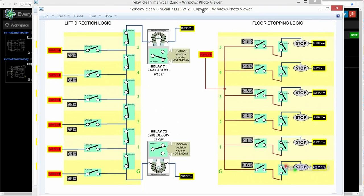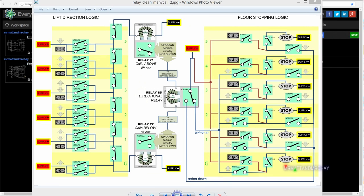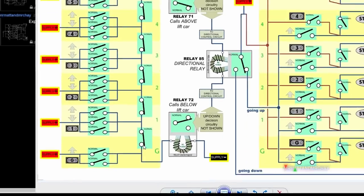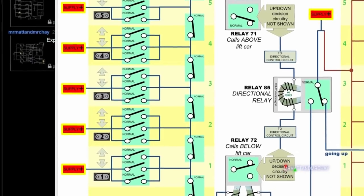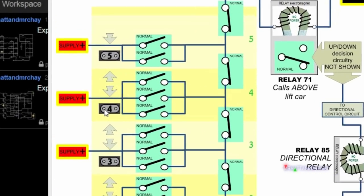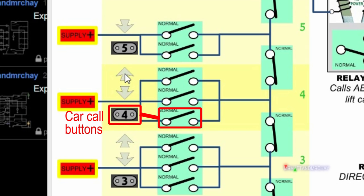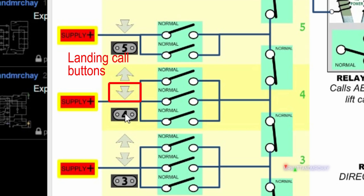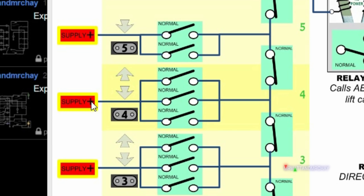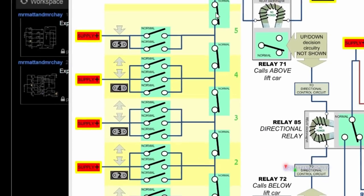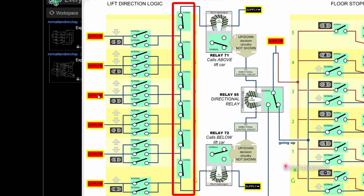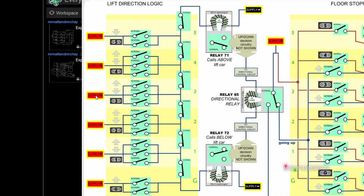This is the complicated version and I have a simpler version here. On the left hand side we have the lift direction logic. The switches here all relate to the floor selector. Down this side we have the call buttons. On the fourth floor we have a button inside the lift, the up landing call, and the down landing call. If you press any one of these buttons it causes one of these switches to come on — normally linked to relays, but here drawn as a switch. So if there's any call active on the fourth floor it allows current through onto this line. I'm going to imagine there is a car call active on the third floor.